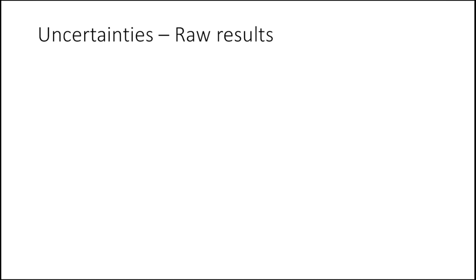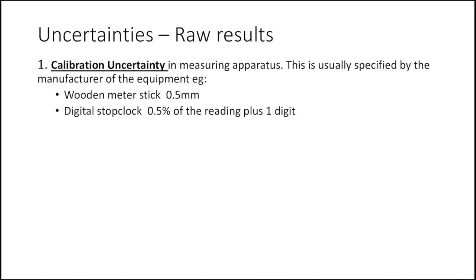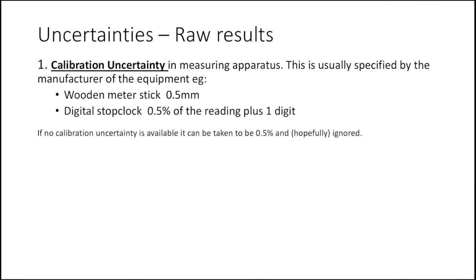What we mean is uncertainties in our raw measurements. There are three types of uncertainty you need to be familiar with. The first one, which wasn't in Higher Physics, is the calibration uncertainty in your measuring apparatus. Usually you're told that in the manufacturer's datasheet, but if you can't find it, a good estimate is plus or minus half a percent — 0.5%.